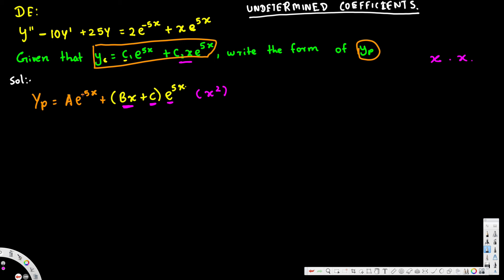The particular solution yp is going to be A*e^(-5x) plus (Bx + C) all together times e^(5x) multiplied by x^2.